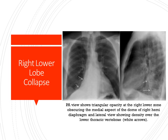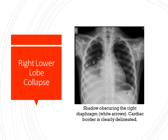In the picture showing the right lower lobe collapse, you can see a dense shadow along the right cardiac border which is triangular with the apex towards the hilum, and the medial portion of the right diaphragm is obscured. The lateral view shows density over the lower thoracic vertebrae. Another picture clearly shows the right lower lobe collapse: a triangular shadow with the apex at the hilum and the diaphragmatic contour obscured.